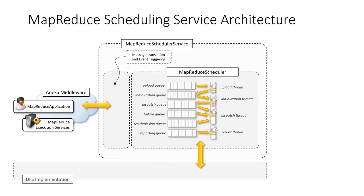The core functionalities for job and task scheduling are implemented in the map reduce scheduler class. The scheduler manages multiple queues for several operations such as uploading input files into the distributed file system, initializing jobs before scheduling, scheduling map and reduce tasks, and reporting execution statistics. All these operations are performed asynchronously and triggered by events happening in the Aneka middleware.